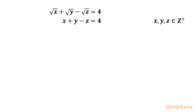Welcome back to Enfijian my dear friends. In today's video we are having one very interesting question from Diophantine equations. We have √x + √y − √z = 4 and x + y − z = 4. We have to find out x, y, z as positive integers.